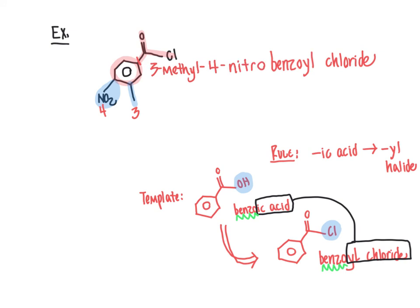There are no stereocenters to contend with here, so the full name is 3-methyl-4-nitrobenzoyl chloride. The key learning point is that when naming acyl halides, you change '-ic acid' from whatever the corresponding carboxylic acid name would be and replace it with '-yl halide' — in this case giving benzoyl chloride as the parent name.